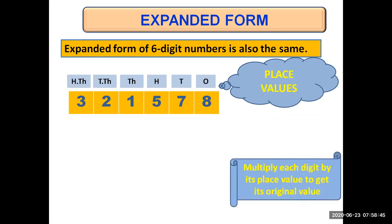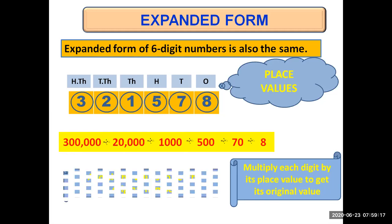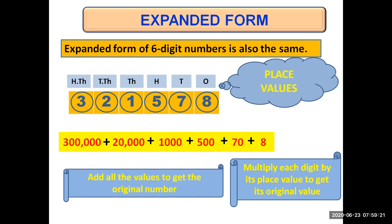Now multiply each digit by its place value to get its original value. Three at hundred thousands means three multiplied by hundred thousand — three hundred thousands. Two at ten thousands means two times ten thousand gives twenty thousands. One at thousands place means one times thousand is one thousand. Five at hundreds place means five hundred. Seven at tens place means seven times ten, seventy, and eight at ones place means eight times one, eight. Write it as sum of all the values and we'll get the original number 321578, which is three hundred and twenty one thousand five hundred and seventy eight.